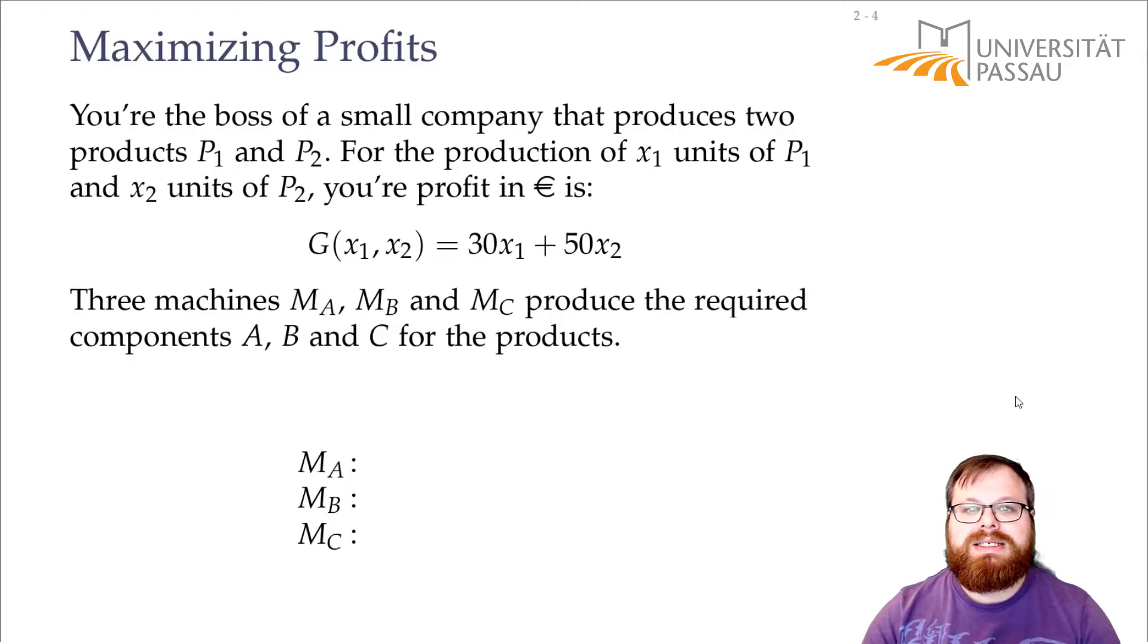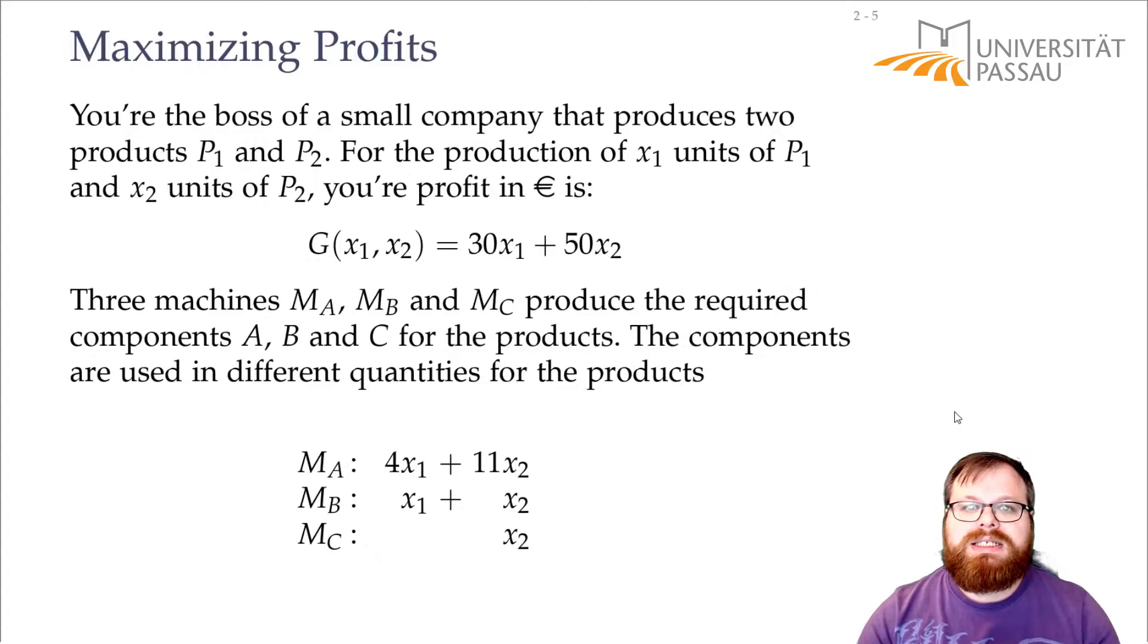But it's not that easy because we have some additional constraints. We have three machines that create our components A, B, and C that we need to produce the hardware. And we need those components in different quantities for our different types of hardware. So for example, for a mouse, we might need a scroll wheel, but not for a keyboard.